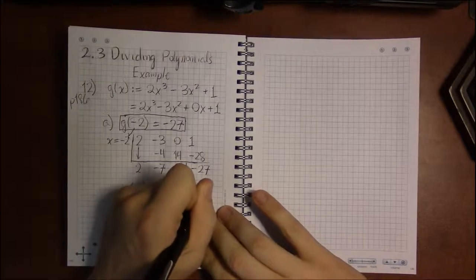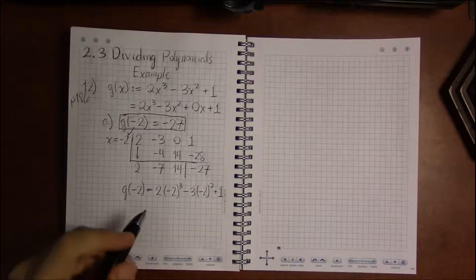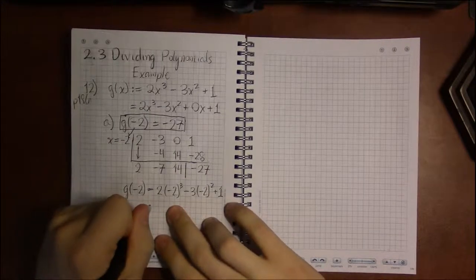So we could plug in minus 2 for x and see what we got as an answer. And assuming I've done everything correctly, we should come out with minus 27.